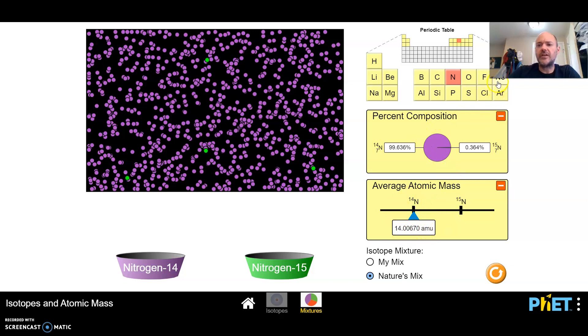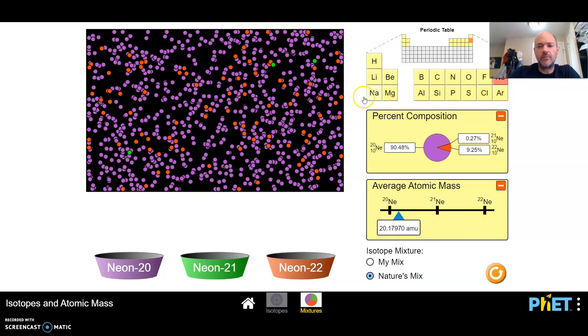So if we look at neon, for example, which is what we looked at in the last one, you see most of them are purple, which means they're neon 20. There are a fair number of reddish ones, which would be neon 22. And then there's like three green ones in here, which would be neon 21.